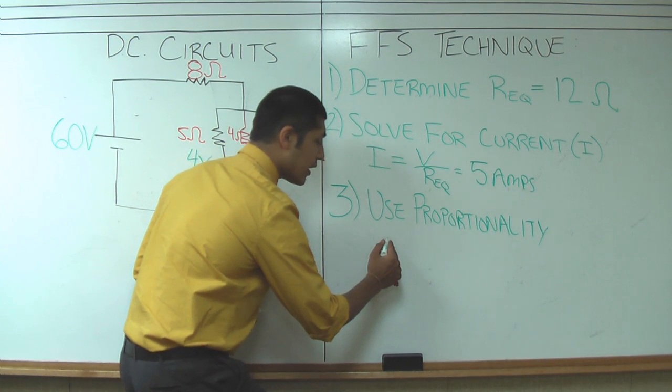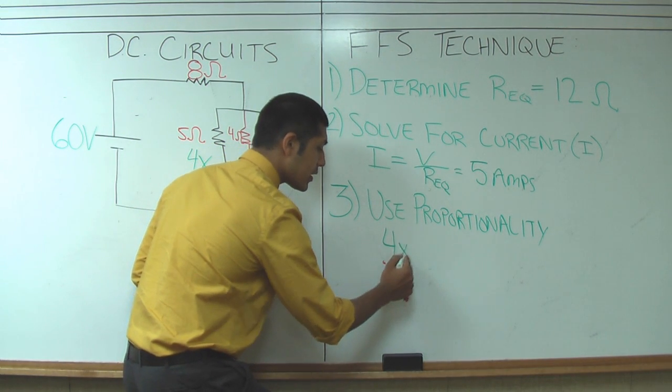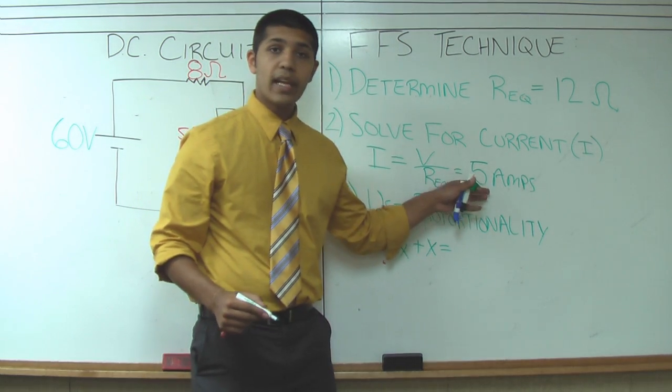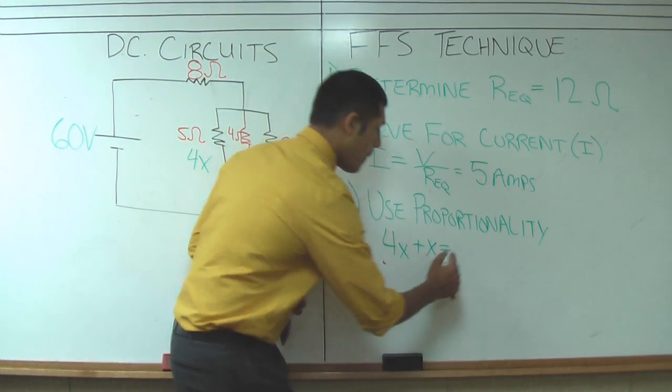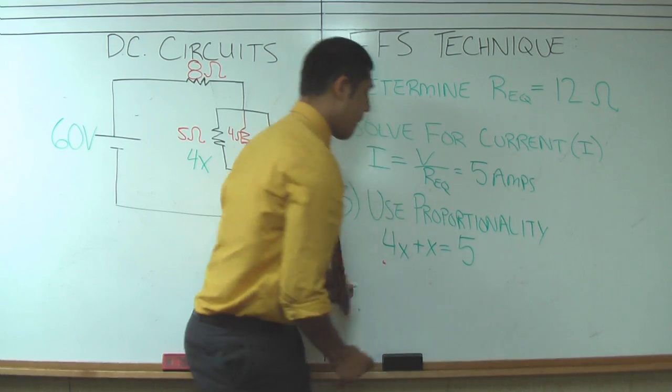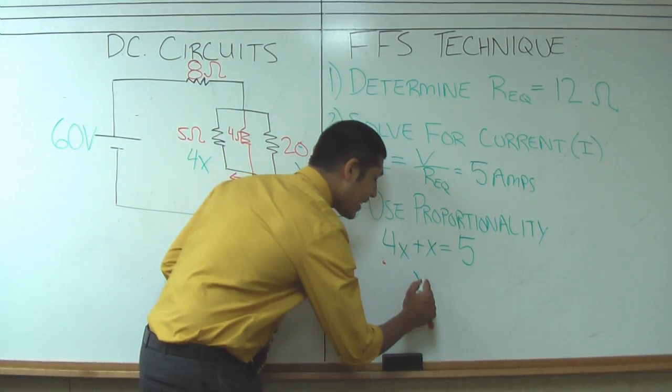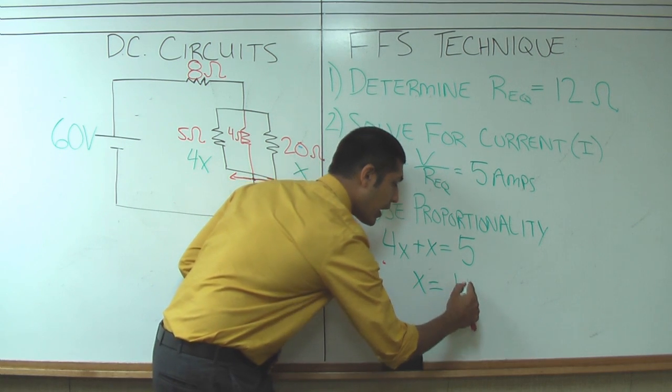So proportionality says 4x plus x should be equal to the total number of electrons which is 5 amps. And now we can algebraically solve for x. x is going to be equal to 1 amp.